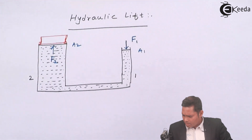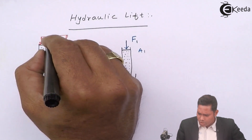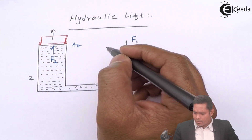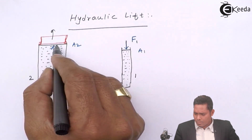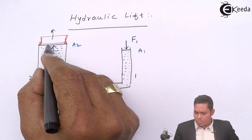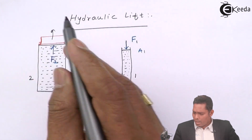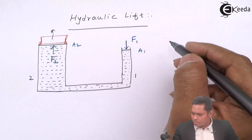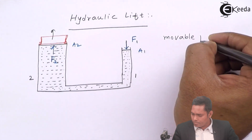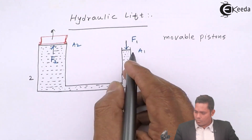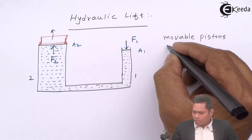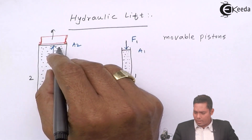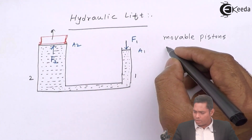This is the vehicle which is to be lifted up, and these are movable pistons. These pistons are movable — they move up. So we have movable pistons on both sides. F1 is the force which is less than F2, because the force will be multiplied here.